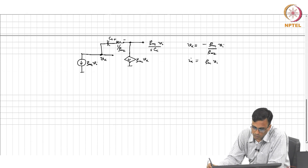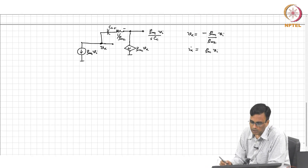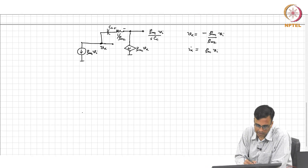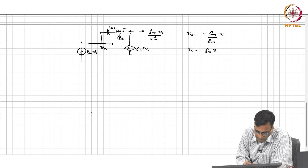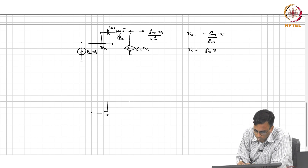Let us get back to the principle. Now let us get back to how one can implement the zero-cancelling resistor in practice. This is the first stage — let me draw the full blown op amp.